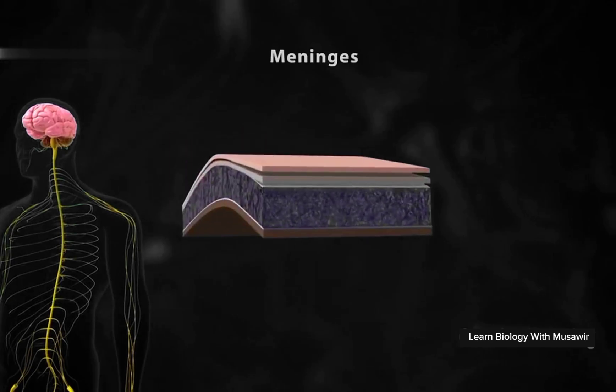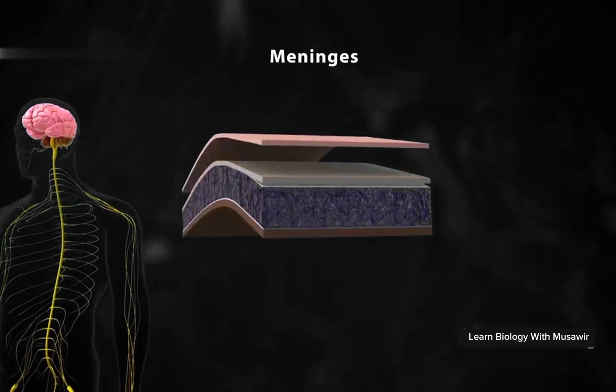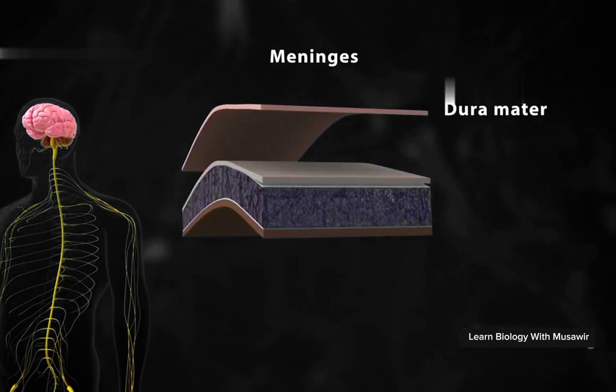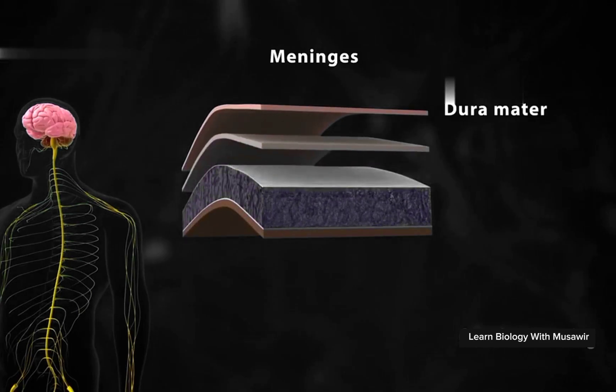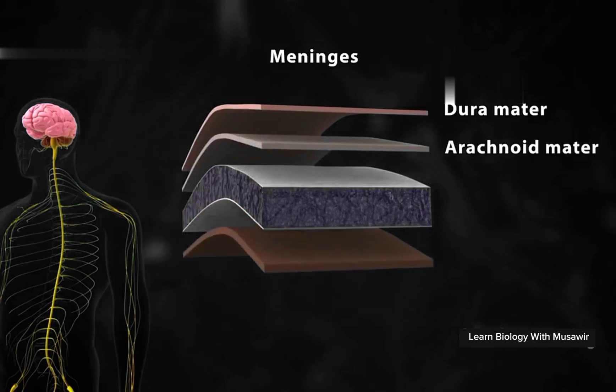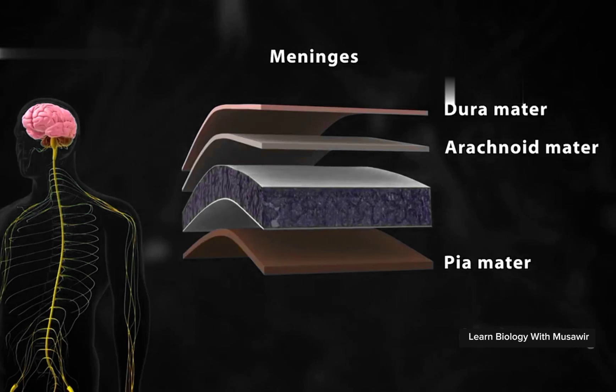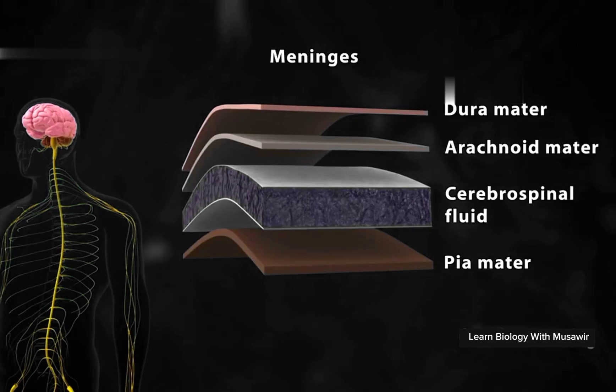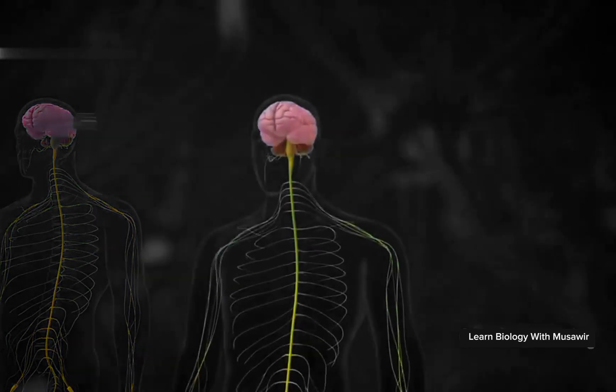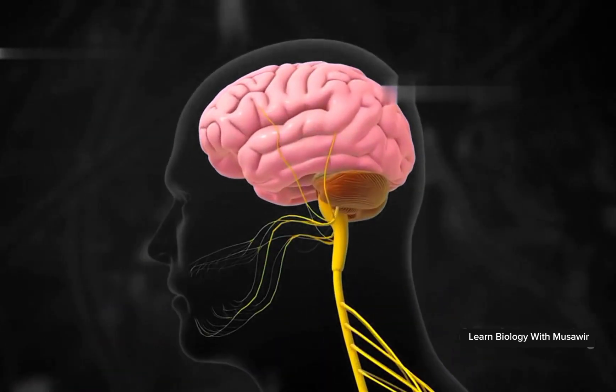These protective layers are called meninges. The outer layer is called the dura mater, the middle layer is called the arachnoid mater, and the inner layer is called the pia mater. The subarachnoid space is filled with cerebrospinal fluid.